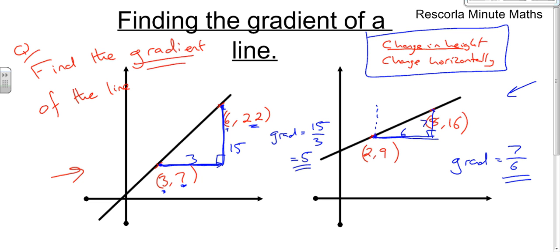Just one more thing to add. All the questions we're doing on this video are positive. But if we see that our line slopes down, we do exactly the same thing. So we do a right angle triangle. But we just know that because it's sloping downwards, the gradient would be negative. But it's still the change in height divided by the change horizontally.